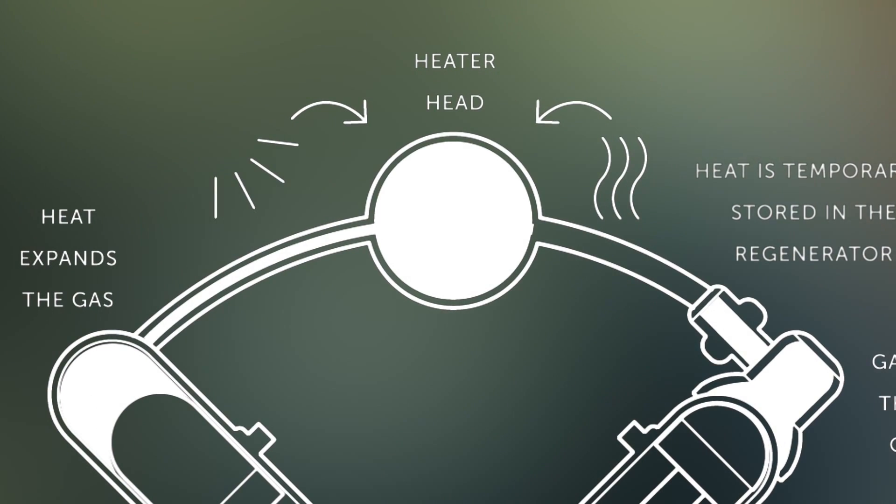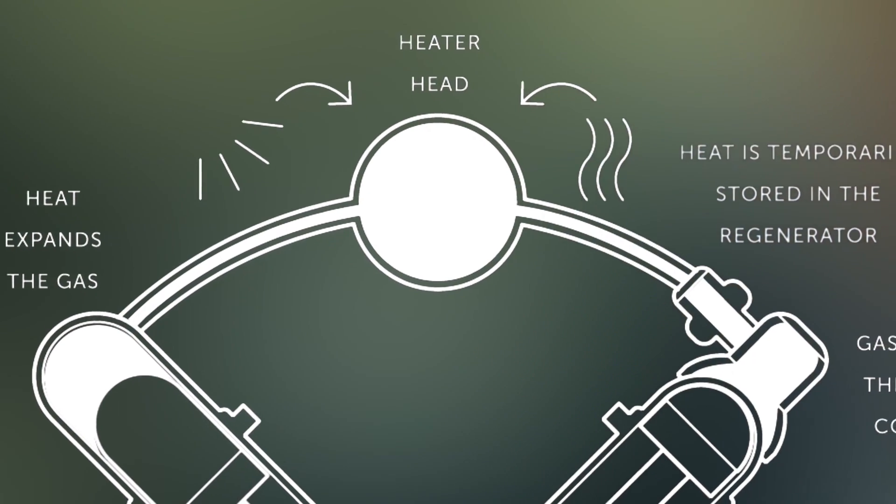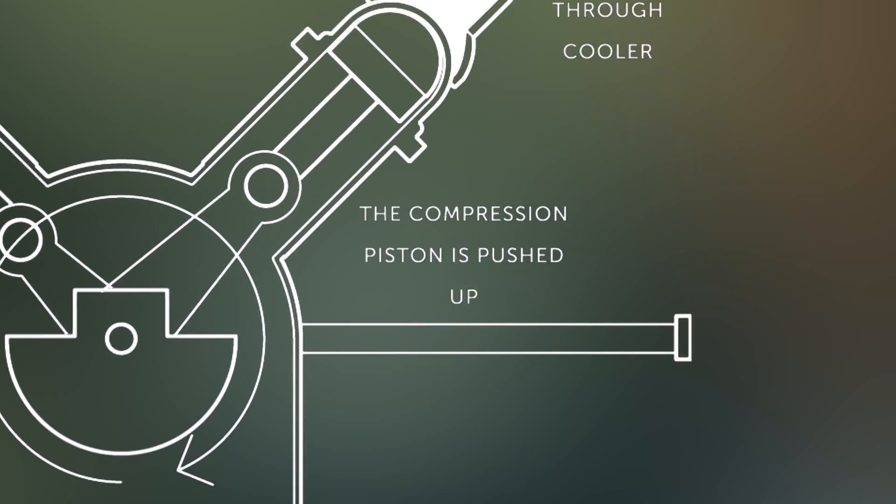The cycle is that you heat up, cool down the working gas about 25 times per second to 700 degrees and 80 degrees. This is the basic of the engine.